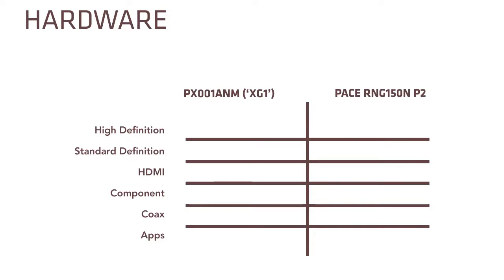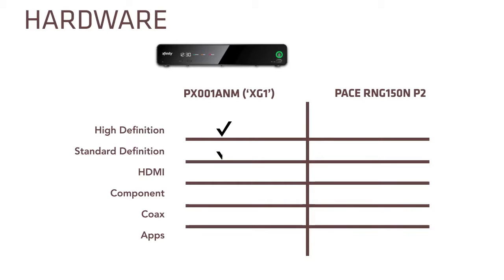First, we're going to look at the XG1 DVR. The XG1 is a 500GB DVR with options to display the X1 platform guide in both widescreen HD and in standard definition mode. It has all the standard outputs, including HDMI, component video, and coax. A customer using an XG1 can record two programs on the DVR and watch a third program all at the same time. As you saw in the overview, there are plenty of features on the X1 platform, including search, the recent history tray, video on demand, and apps.